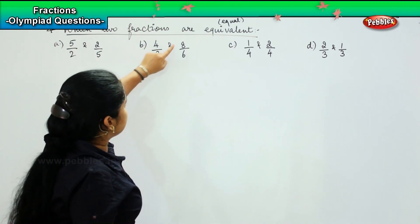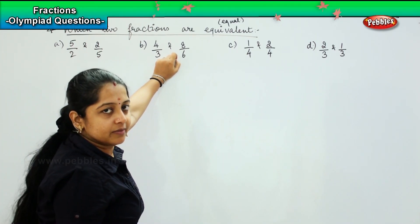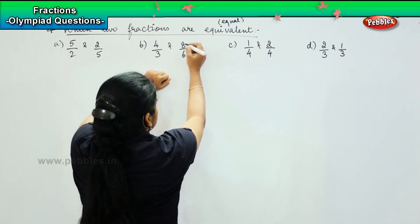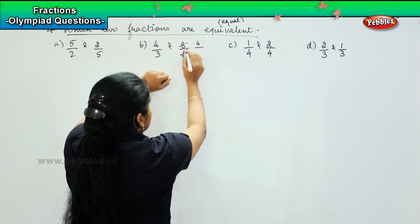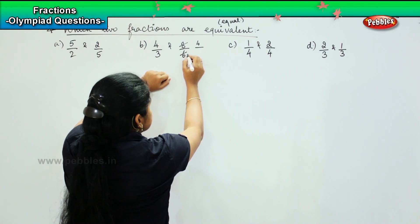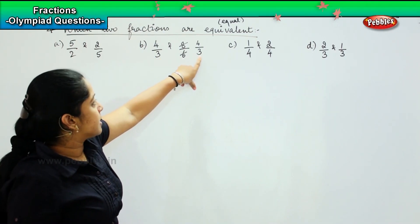Coming to the next one, 4/3 and 8/6. Is it possible to simplify 8/6? We can divide it by 2. So 2 times 4 is 8 and 2 times 3 is 6. So 8/6 can also be written as 4/3.